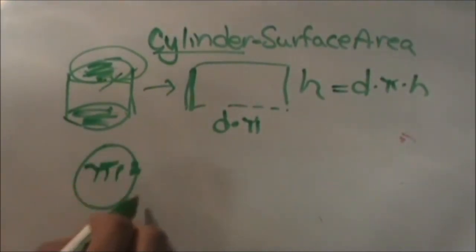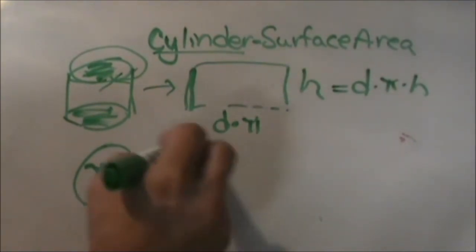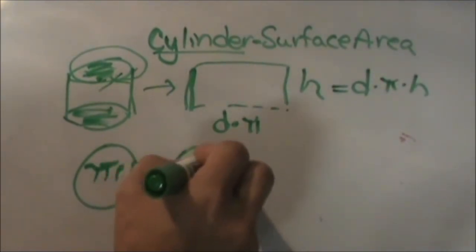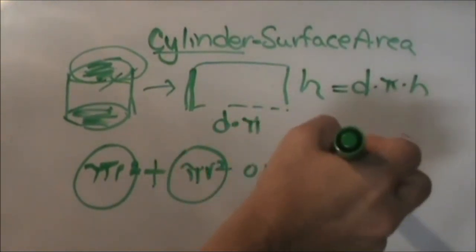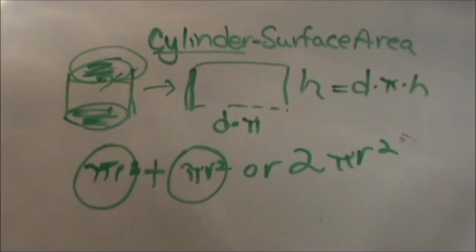So the area of a circle is just pi r squared. So you take the pi r squared, and you have two of those. So you're going to take pi r squared plus pi r squared, or two pi r squared, and that gives me the two bases.